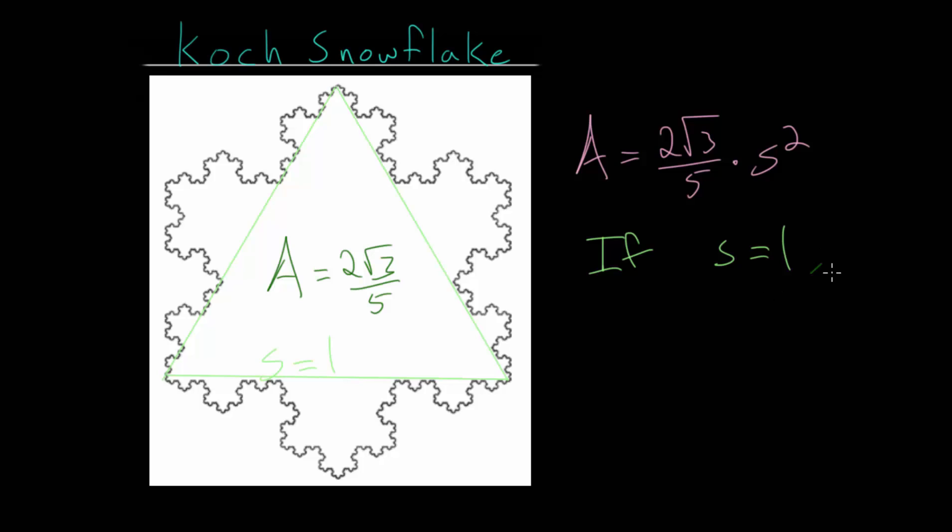And just to see this as a decimal, the area would be approximately, since it's an irrational number, 0.692820, and this would go on forever. But this does confirm that even though the length around this figure, the perimeter, is infinite, the area is a finite number.